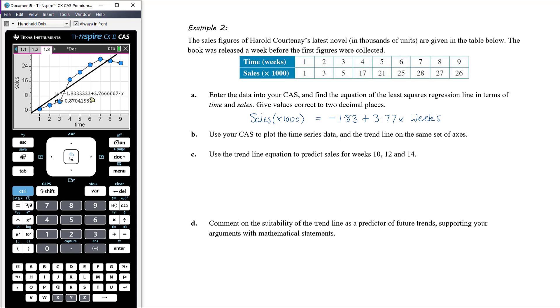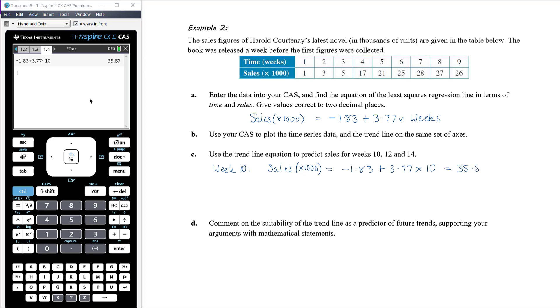Use the trend line equation to predict sales for weeks 10, 12, and 14. So week 10, we would expect the sales times 1,000 to be negative 1.83 plus 3.77 times 10. Let's get a calculator page. Minus 1.83 plus 3.77 times 10. So it is 35.87 times 1,000, so that's 35,870 books in week 10 would be the prediction.